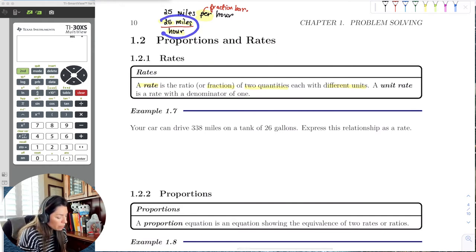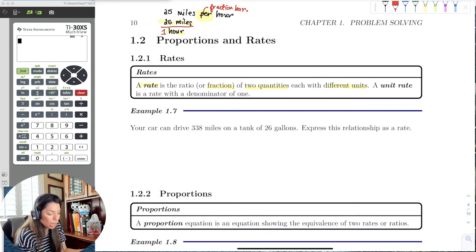And essentially what it means is the denominator is one. So in this case, 25 miles per hour, notice there's 25 miles on top and per hour. So we don't always write it, but we know it's there. There's like this per one hour. I can drive 25 miles in one hour. So that means in two hours I could go 50 miles. So essentially when the denominator is one, that's going to be the unit rate.